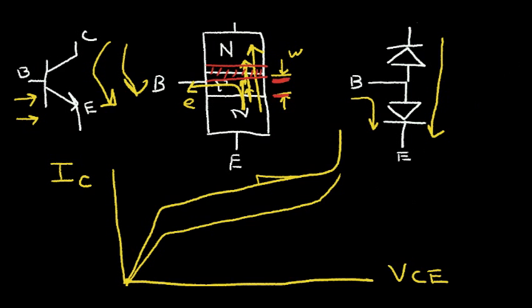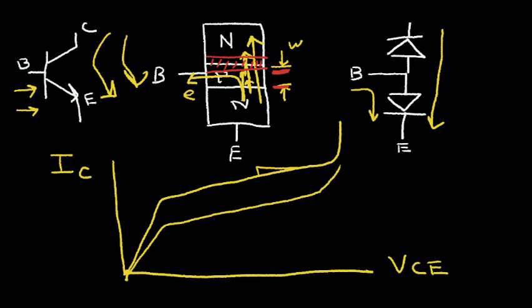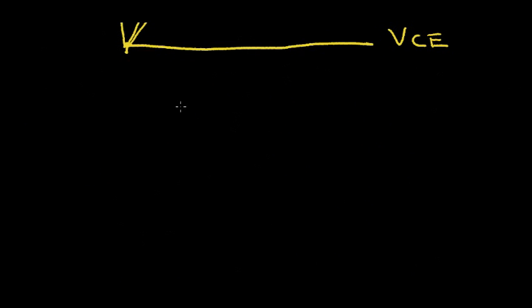So there's an important parameter for this NPN transistor, and that's called beta. And beta is defined as the collector current divided by the base current. So it's a measure of the current gain that the transistor can produce. And a typical value could be 100 or so.